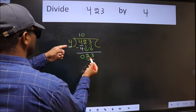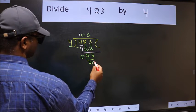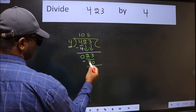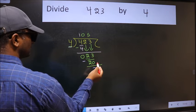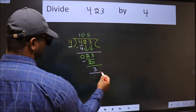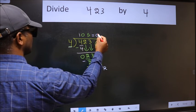A number close to 23 in 4 table is 4 times 5, 20. Now we should subtract. We get 3. No more numbers to bring it down. So we stop here. This is our remainder and this is our quotient.